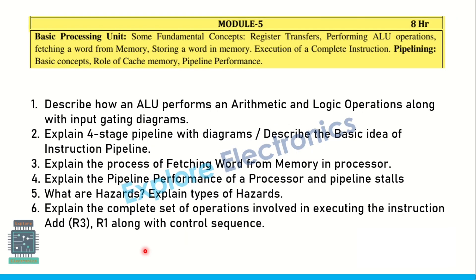Coming to module 5 — describe how the ALU performs arithmetic and logical operations, which is a very important question. Pipelining will definitely be asked: explain 4-stage pipelining with diagrams, the basic idea of instruction pipeline, the process of fetching a word from memory in a processor, pipeline performance, and pipelining stalls. Hazards are also very important in this module. A standard question is to explain the complete set of operations in execution of an instruction along with the control sequence. These questions have appeared in model question papers — they are very important and can be expected in the examination.